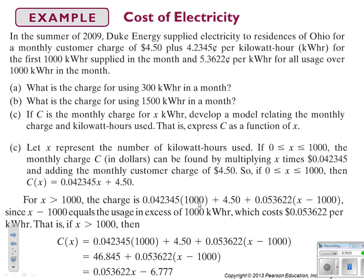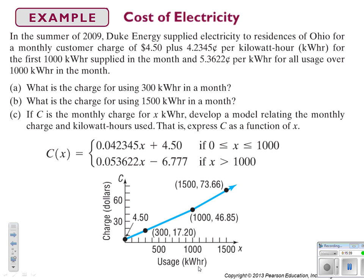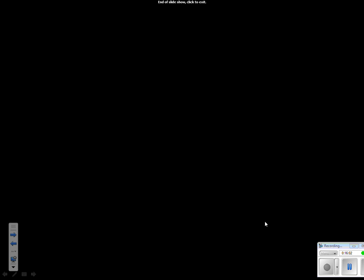To build the piecewise model C(x): for 0 ≤ x ≤ 1000, it's 0.042345x + 4.50. For x > 1000, we charge the first 1,000 at the lower rate plus the $4.50 service charge, then add the higher rate times whatever exceeds 1,000. Simplifying by distributing and combining like terms gives 0.053622x − 6.777 for x > 1,000. The graph shows a line with a slightly steeper slope after x = 1,000, matching the higher rate.